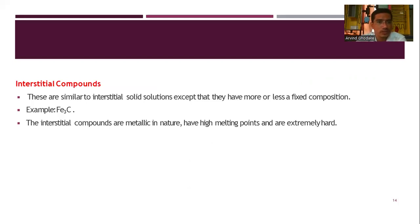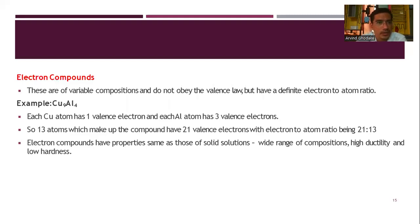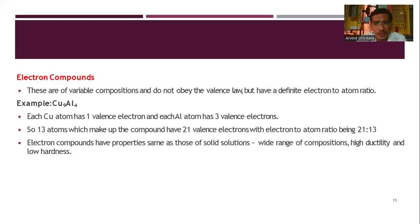Interstitial compounds are similar to interstitial solid solutions except that they have more or less fixed compositions. An example is Fe₃C (cementite). Interstitial compounds are metallic in nature, have a high melting point, and are extremely hard. Electron compounds have variable compositions and do not obey the valence law, but have a definite electron-to-atom ratio. For example, in CuAl, each copper atom has one valence electron and each aluminum atom has three. The 13 atoms forming this compound have 21 valence electrons, giving an electron-to-atom ratio of 21:13. Electron compounds have properties similar to solid solutions — a wide range of composition, high ductility, and low hardness.